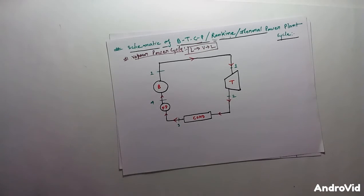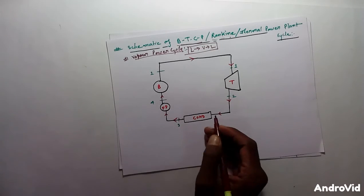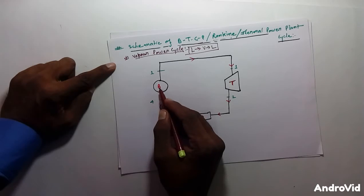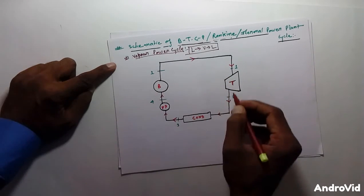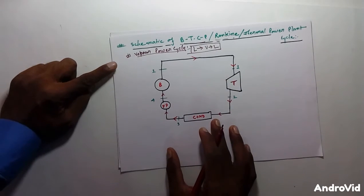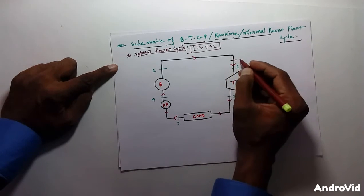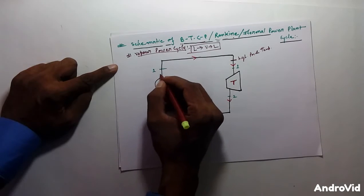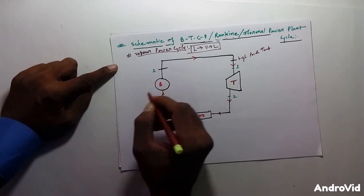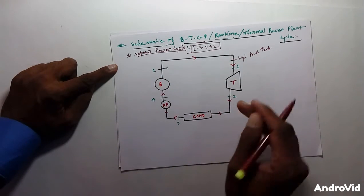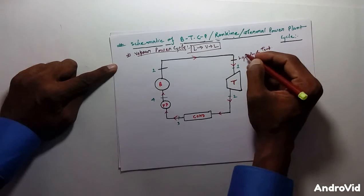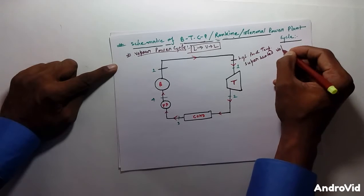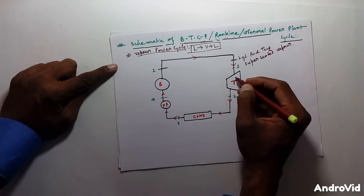Let me describe the schematic of the Rankine cycle. We have a turbine, a condenser, a feed pump, and a boiler. By connecting these four components in sequence, we draw the schematic of the Rankine cycle. Starting from point one, at point one we have high pressure and high temperature superheated vapor coming from the boiler.